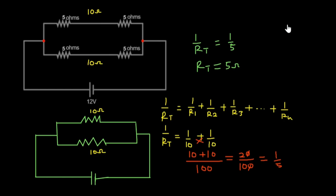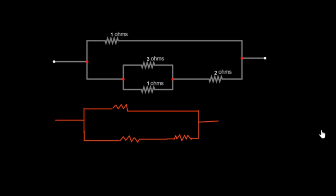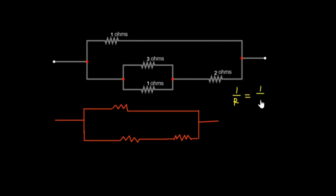Let's move on to the next question for more understanding. You are supposed to calculate the effective resistance for this circuit. Looking at the circuit directly, you will see that the 3 ohms resistor and the 1 ohm resistor are in a parallel connection. So first let's find the effective resistance for these two resistors using the parallel formula: 1 over R equals 1 over 3 plus 1 over 1.